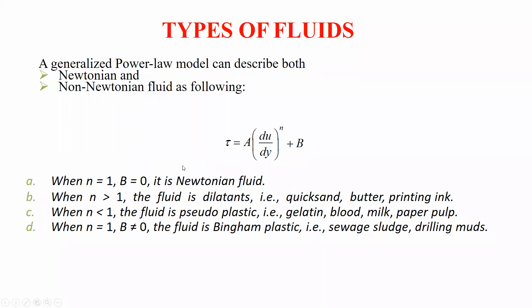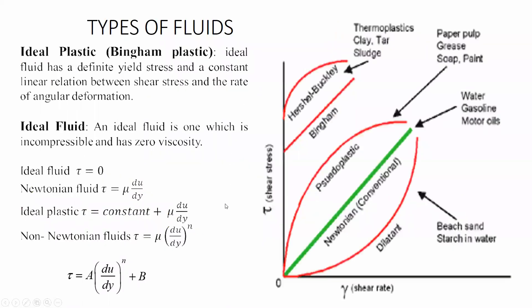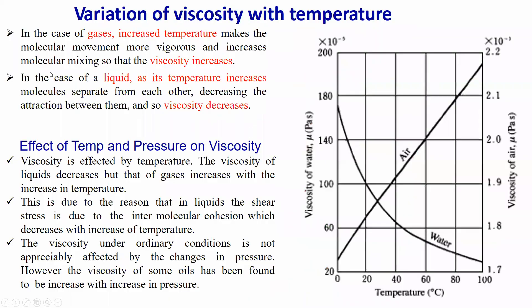Fluids can be classified using the power law: τ = μ(du/dy)ⁿ + b. If n = 1 and b = 0, the fluid is Newtonian. If n > 1, it is dilatant. If n < 1, it is pseudo-plastic. If n = 1 and b ≠ 0, it is a Bingham plastic. An ideal fluid is incompressible with zero viscosity (τ = 0), while an ideal plastic has a definite yield stress and a constant linear stress-strain relationship.